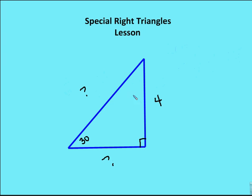Moving on: I have another 30-60-90 triangle where 4 is the value of x, so this becomes a little bit more easy. The side opposite 60 is 4-root 3, and then 2x, which is going to be 8.